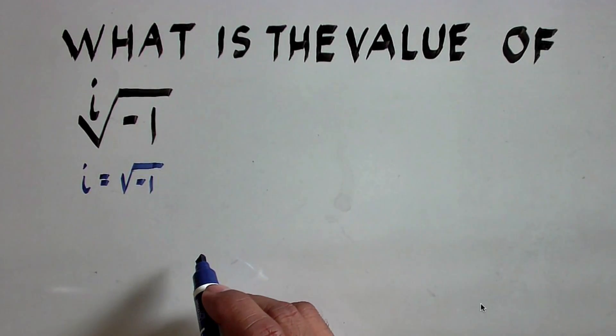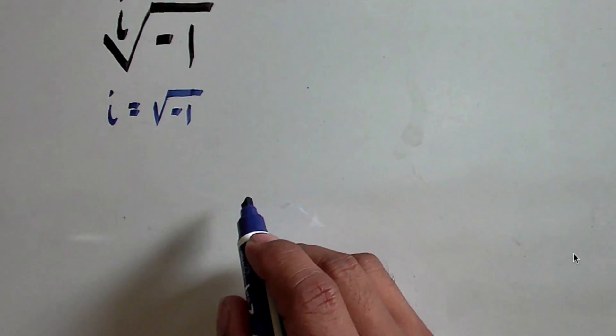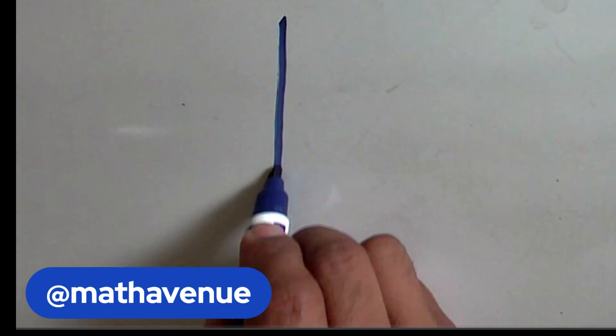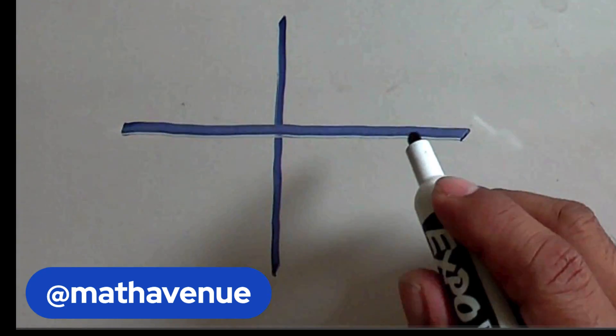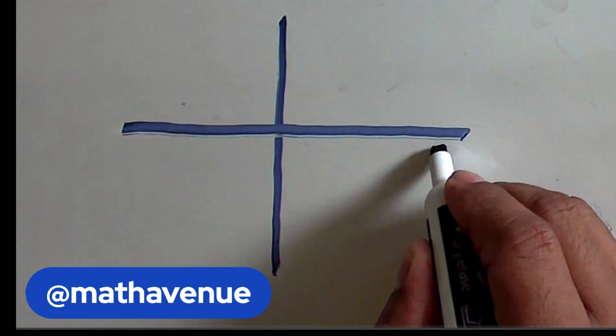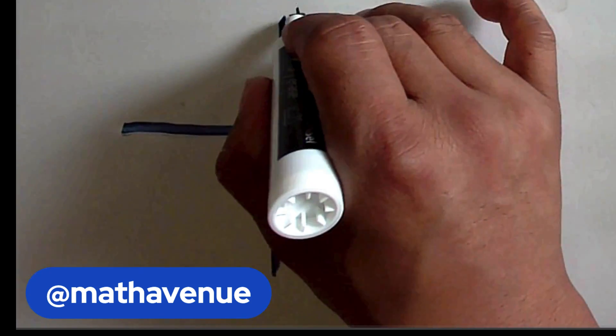So, in order to solve this, we need to recall our concept of complex numbers. Let's draw a complex plane. In the complex plane, this is our real part, and this is our imaginary axis.